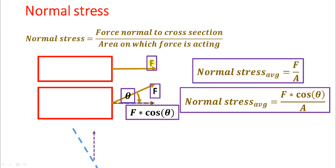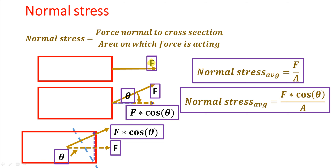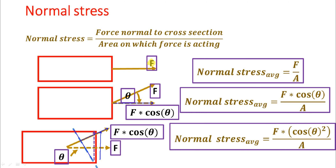Now I am adding more complexity by considering an inclined surface. Here the force is acting horizontally, but we need to take the inclined section. The force component normal to this inclined surface will be F cos theta. And since the area is inclined, it becomes A divided by cos theta — so A over cos theta. Our normal stress comes out as F cos theta divided by (A / cos theta), which gives F cos²theta divided by A. This is the basic geometry — you can pause the video and verify this yourself.